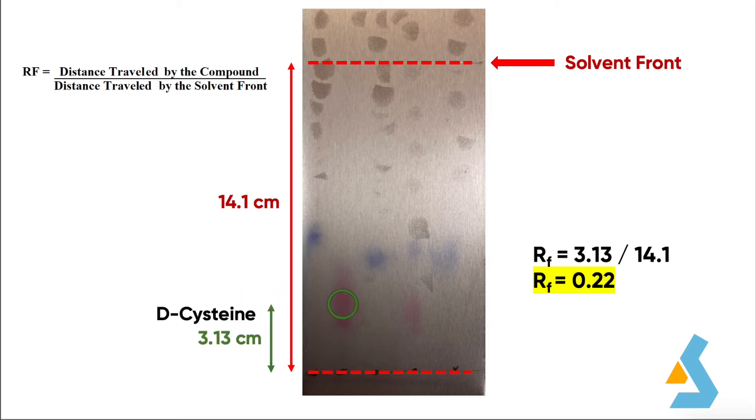We then did the same calculation for our second sample, D-cysteine. The distance traveled by D-cysteine was 3.13 cm. Then, by dividing 3.13 by 14.1, we found the retention factor value for D-cysteine as 0.22.